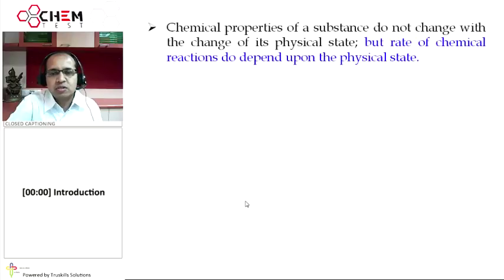Chemical properties of a substance do not change with the change of its physical state, but rate of chemical reactions do depend upon the physical state. For example, you take identical-sized pieces of coal. You introduce one piece of coal in the fire as it is, and in the second piece, you crush it into powder form and then throw it in the fire. Powder form of coal burns faster than the piece of coal, which indicates that rate of reaction changes with the change in physical state.